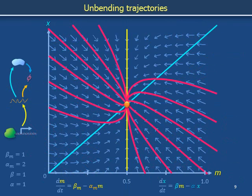One can easily appreciate that most of the curves on this phase portrait are literally curves — most of the curves are not straight lines, they display curvature. However, some of the trajectories look very straight. In these cases, the dynamics look particularly simple and one-dimensional.